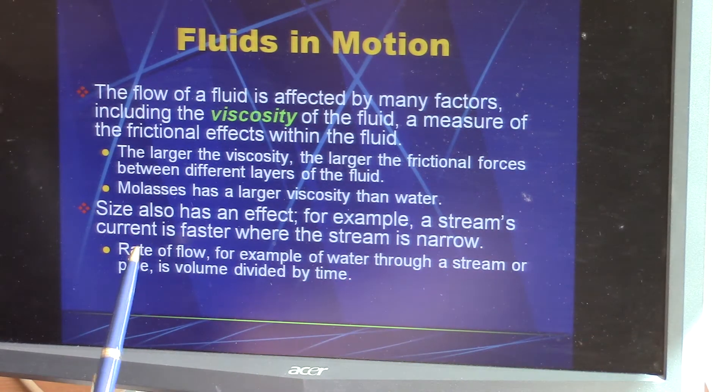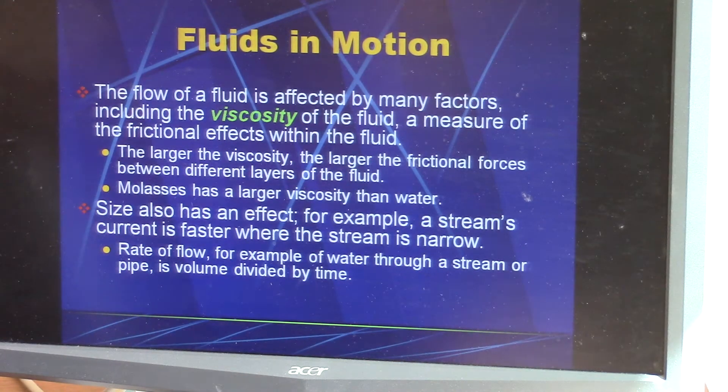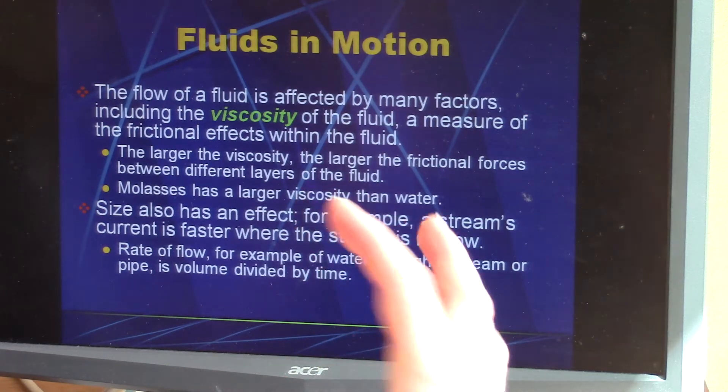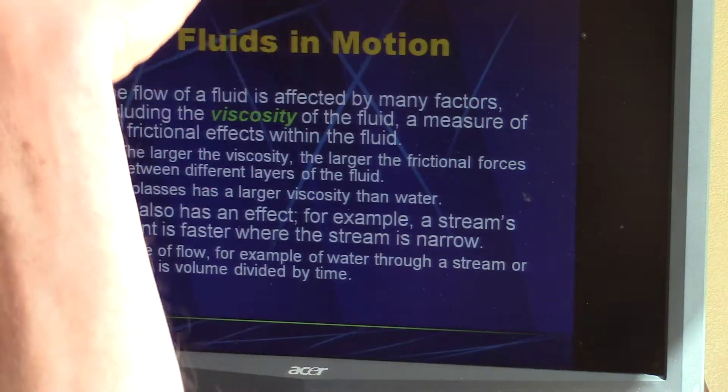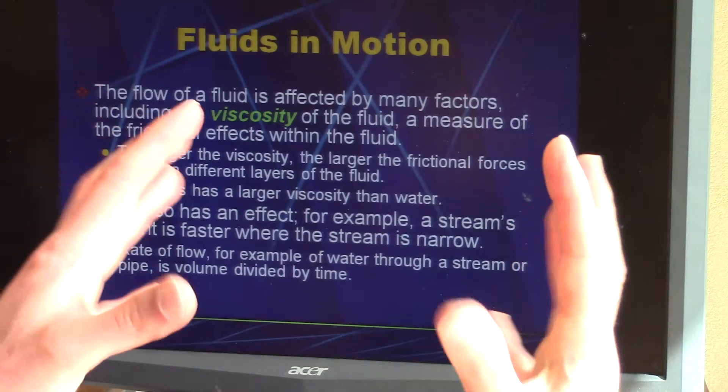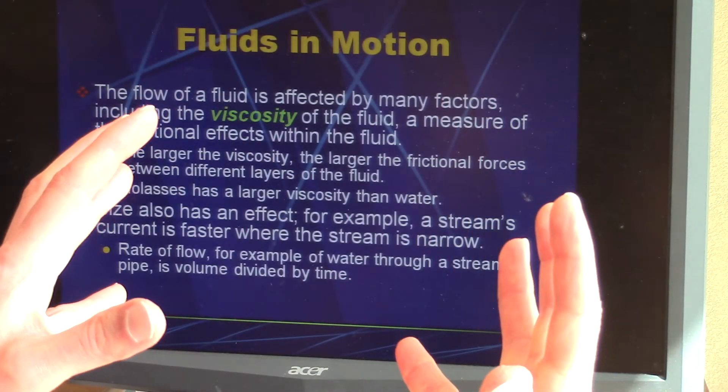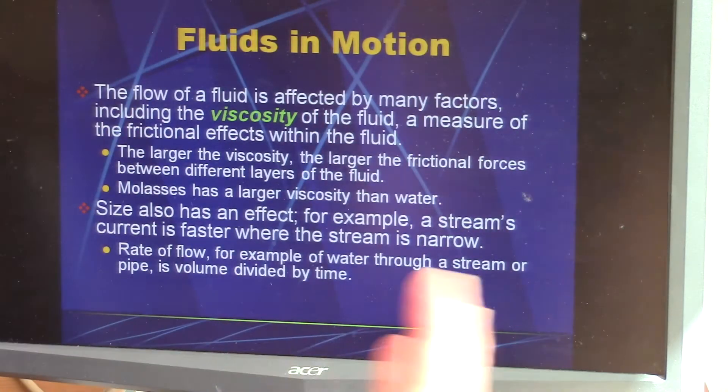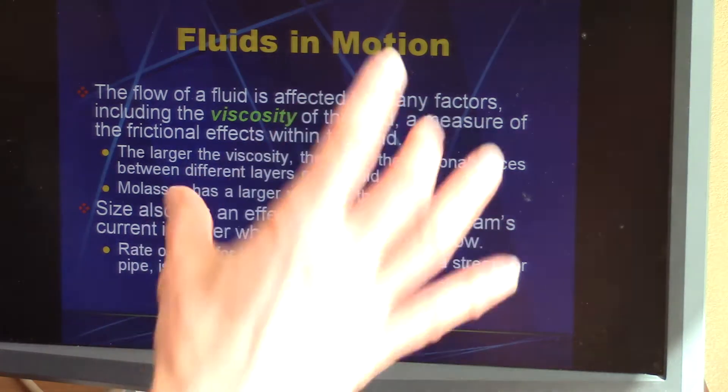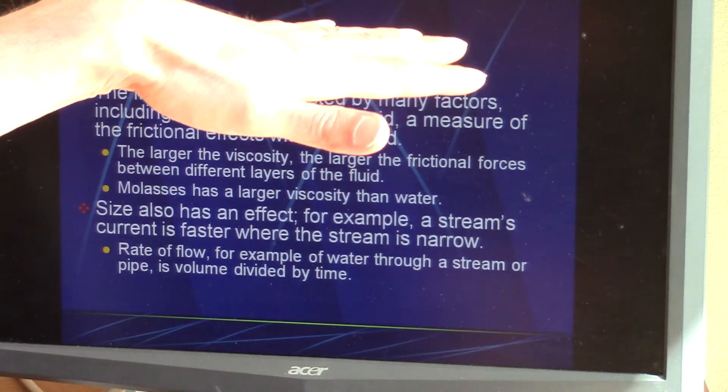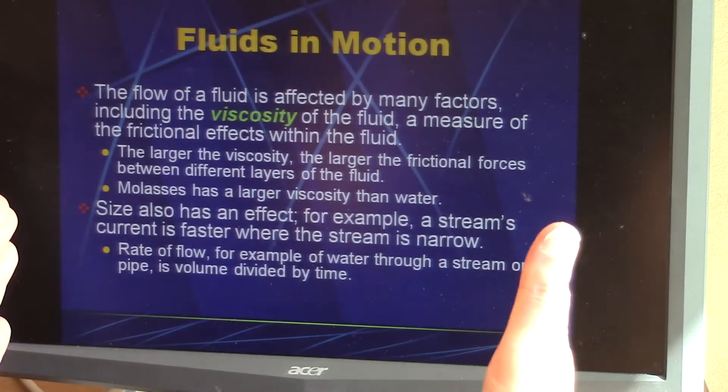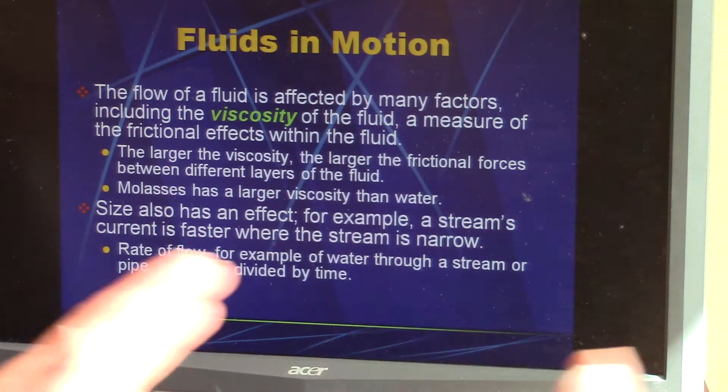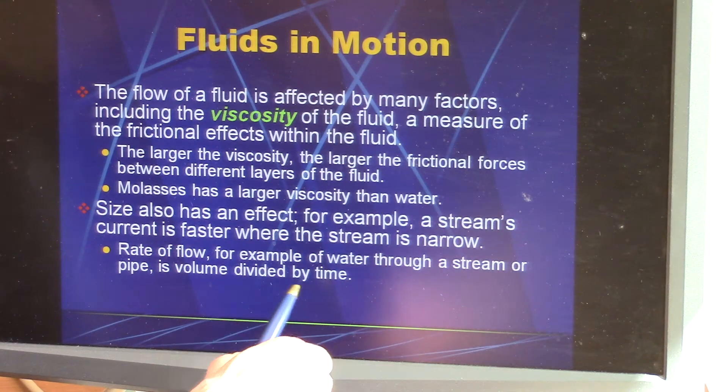Here's a term: the rate of flow. Water going through a pipe, it's the volume of water that's going. So if the pipe is about this big, one gallon would be about this much, and gallons per minute is how many gallons per minute are flowing through the pipe, or liters per minute. That is rate of flow: volume divided by time.